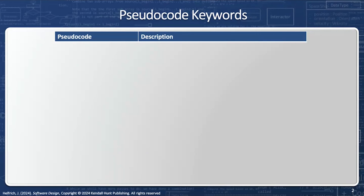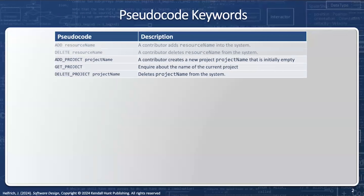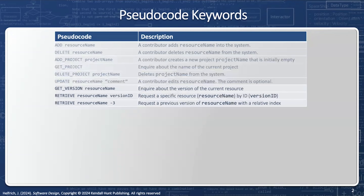The pseudocode consists of many elements. First of all, we can add or delete a resource with 'add resource_name' and 'delete resource_name'. Next, we can add a project, get a project, and then delete a project. You can update a resource — for example, if I want to update display.c++, I can say 'update display.c++' and then the comment describing what was changed about it.